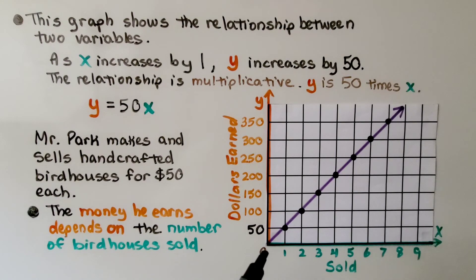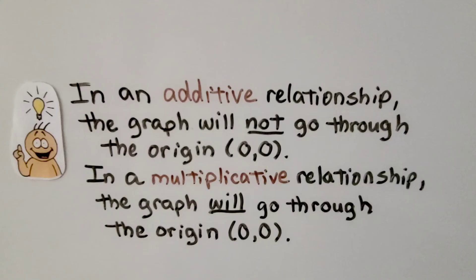Now, look at our graph. Do you notice it goes through the origin right here at 0, 0? In an additive relationship, the graph will not go through the origin 0, 0. In a multiplicative relationship, the graph will go through the origin 0, 0.